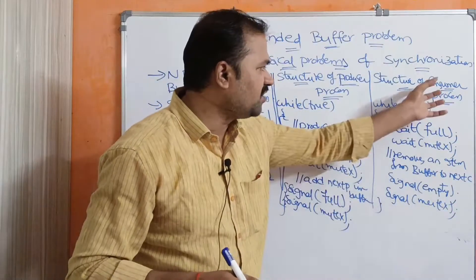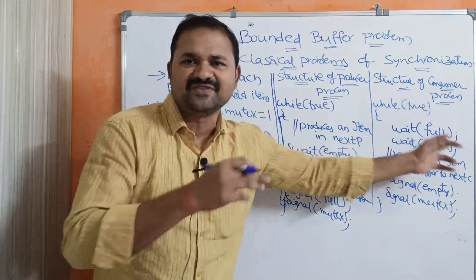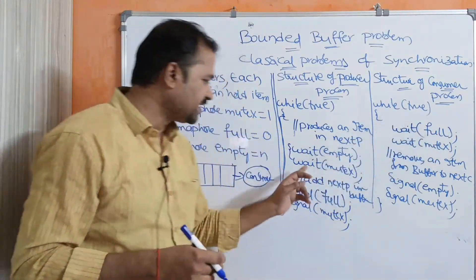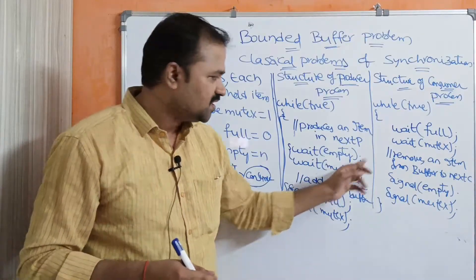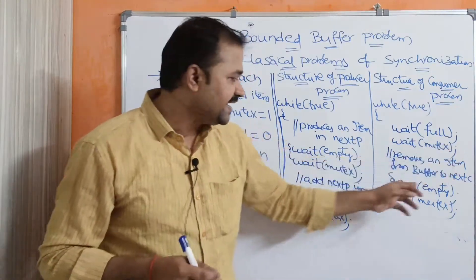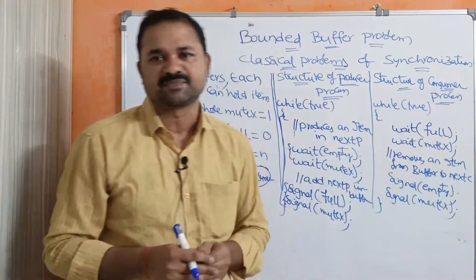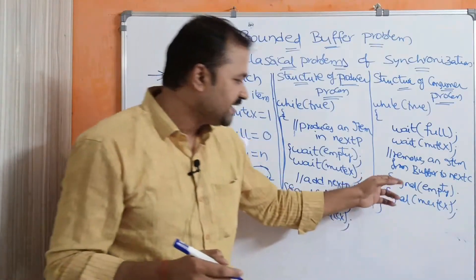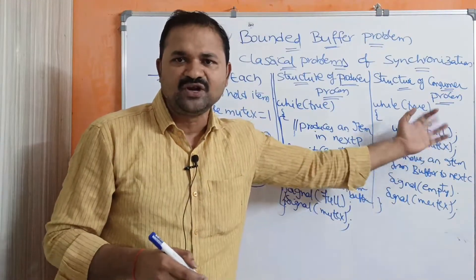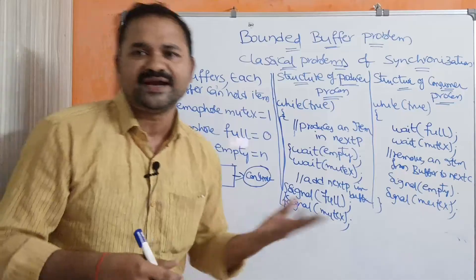For the structure of the consumer process: in the producer we had wait(empty), so in the consumer we get the reverse — wait(full). Here also we must write wait(mutex) to lock the critical section. The critical section code removes an item from the buffer and stores it in nextC. Then the exit section: signal(empty) — the reverse of full is empty — and signal(mutex) to allow other processes to enter the critical section.